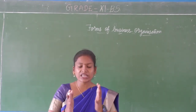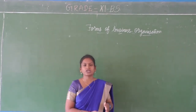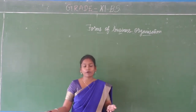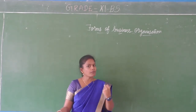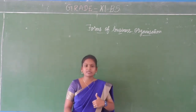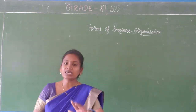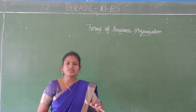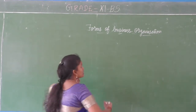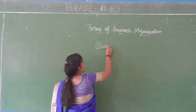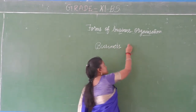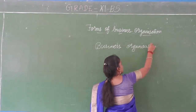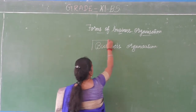Once we have discussed individually about each form of business organization, we are going to have a comparison of which is the best one - what is good in each form of business organization, and which form is good for my line of business. So first let us start with the classification. Business organizations are basically classified into 5 kinds, 5 forms.